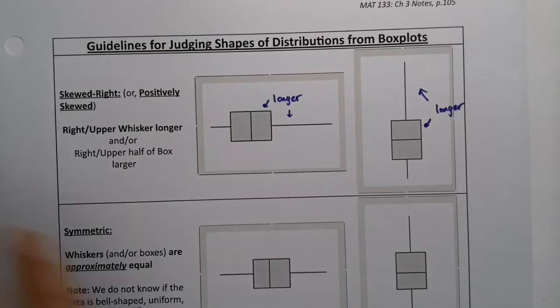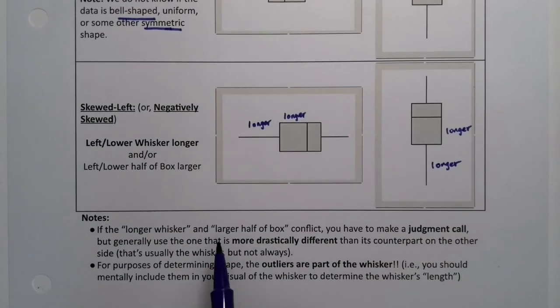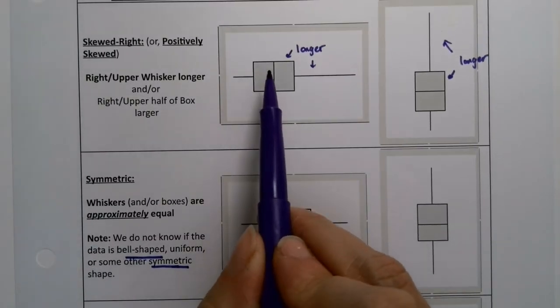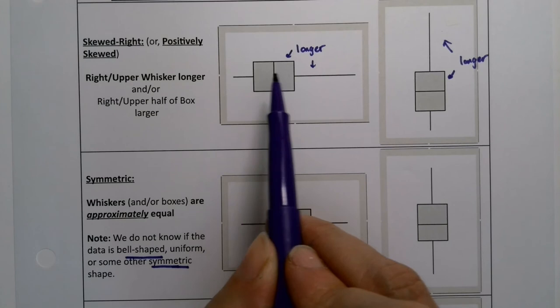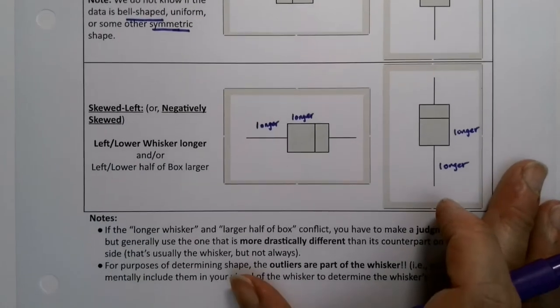Now, the question does arise. What happens if you have a longer whisker on one side and then the longer half of the box is on the other side? Which actually happens just a little bit up here on this one. That's a little bit larger, and then this is really long.